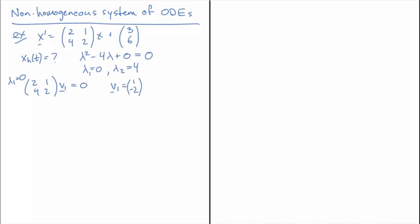For lambda 2 equals 4, we get the matrix (-2, 1; 4, -2), and that's multiplied by V2. In this case, that will equal 0 if we choose V2 to be equal to (1; 2).